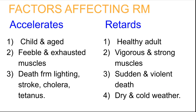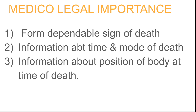Factors affecting rigor mortis: factors which accelerate it include children and aged persons, feeble and exhausted muscles, and death from lightning, stroke, cholera, or tetanus. Factors which retard it include healthy adults, vigorous and strong muscles, sudden and violent death, and dry and cold weather. Medico-legally, rigor mortis forms a dependable sign of death, provides information about the time and mode of death, and gives information about the position of the body at the time of death.